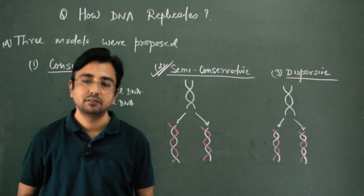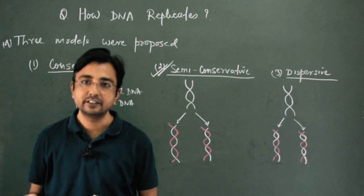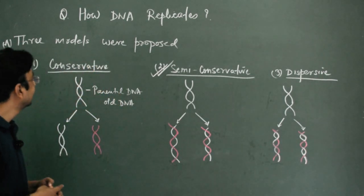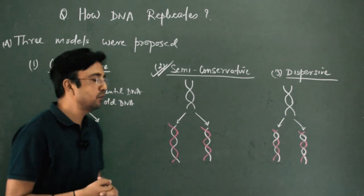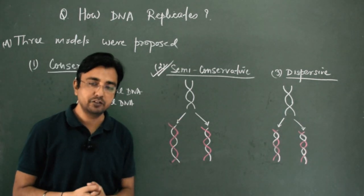Scientists gave different models about how DNA replicates. The first model was conservative model, the second was semi-conservative model, and the third was dispersive model.